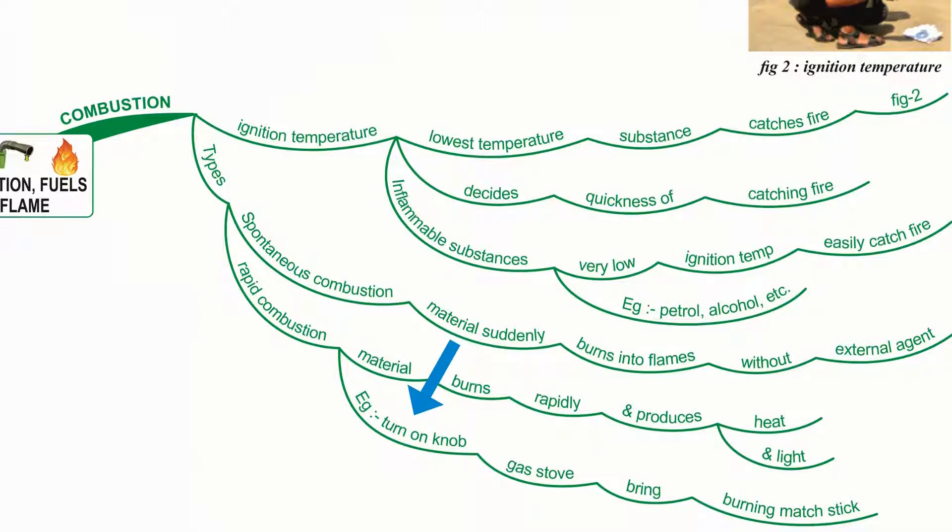For example, when you turn on the knob of a gas stove in the kitchen and bring a burning matchstick or a gas lighter near it, the gas burns rapidly and produces heat and light.